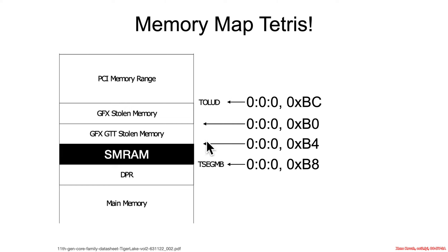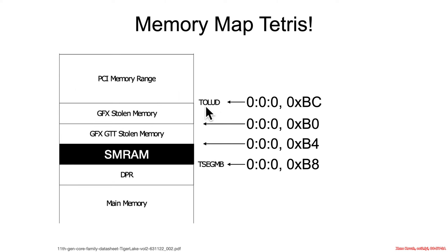So Toled is the top of lower usable DRAM. There is a way to reclaim the physical memory space stolen by memory-mapped IO — basically, Toled marks where the thievery for memory-mapped IO starts.